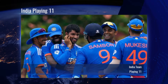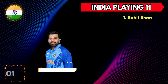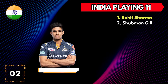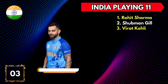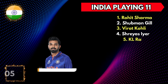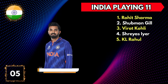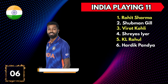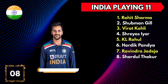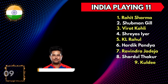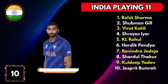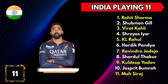India Team Final Playing 11: 1. Rohit Sharma, 2. Shubman Gill, 3. Virat Kohli, 4. Shreyas Iyer, 5. KL Rahul, 6. Hardik Pandya, 7. Ravindra Jadeja, 8. Shardul Thakur, 9. Kuldeep Yadav, 10. Jasprit Bumrah, 11. Mohammed Siraj.